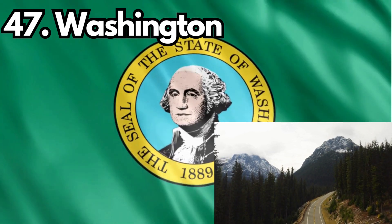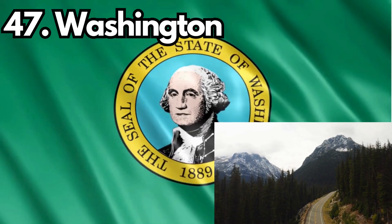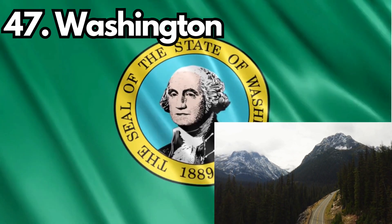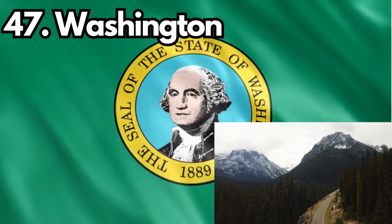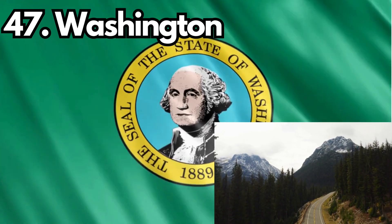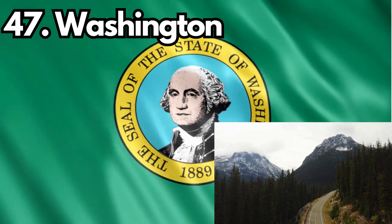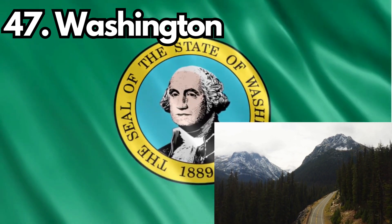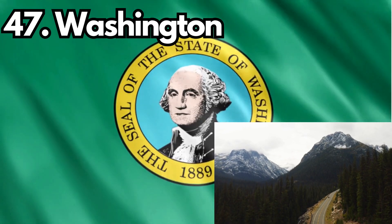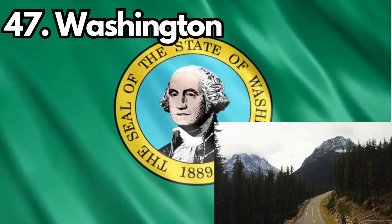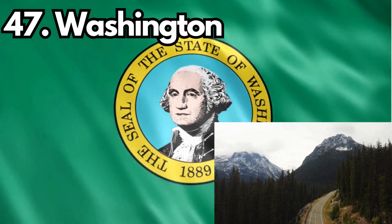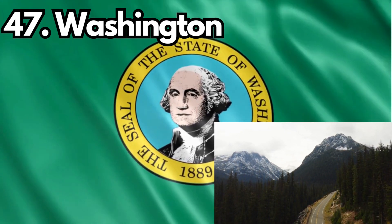47. Washington. Design: The Washington state flag features a field of green with the state seal centered and the state name above it. Meaning: The state seal includes symbols of industry, such as a ship, a plow, and a wagon. The state motto, 'Alki' (by and by), is also present. History: The current design was officially adopted in 1923.